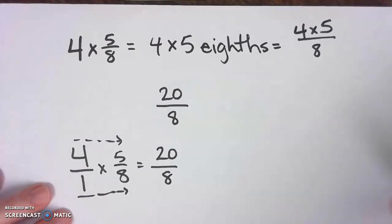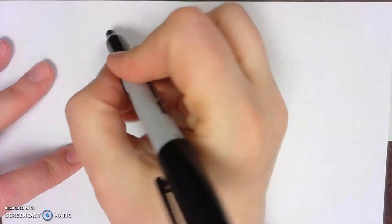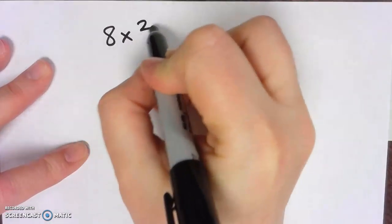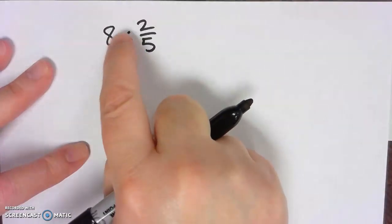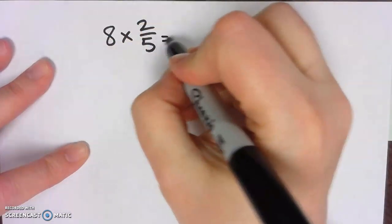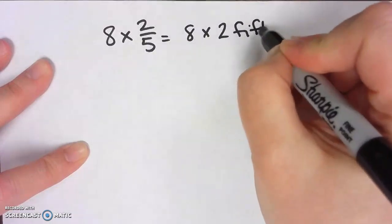Let's do another one. Let's do 8 times 2/5. So again, unit form: eight times 2 fifths. Here we go. Eight times 2 fifths.